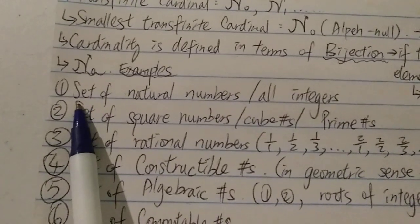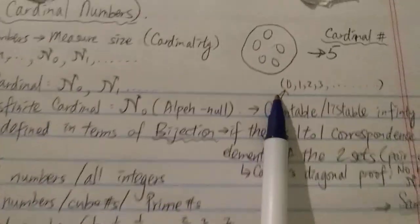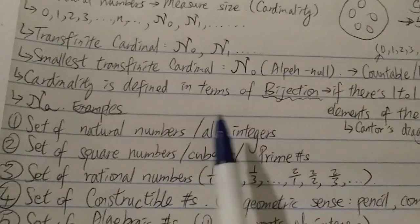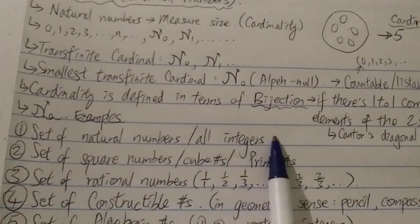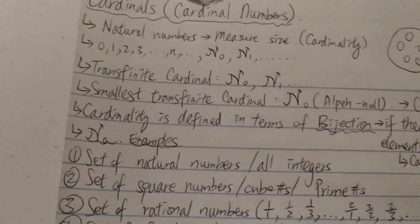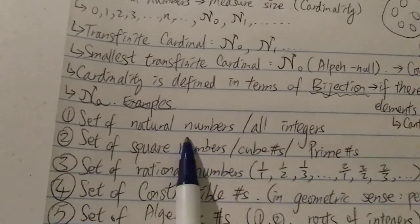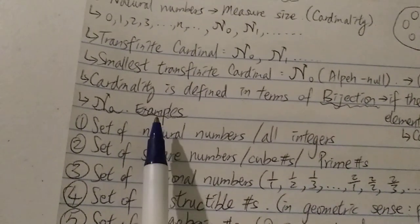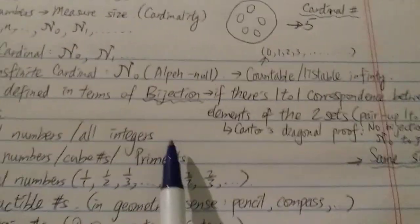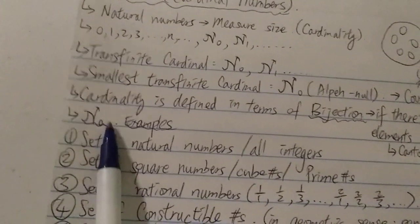Let's look at some examples of aleph-0. The first example is the set of all natural numbers, or basically all the integers — 0, 1, 2, 3, 4, 5, 6, 7, 8, and so on up to Graham's number, etc. All the integers have the cardinal number aleph-0. The second example would be the set of square numbers, cube numbers, and prime numbers. These are subsets of all the natural numbers, but since you can show a one-to-one pairing between them and the naturals, they are all the same size — both are aleph-0.